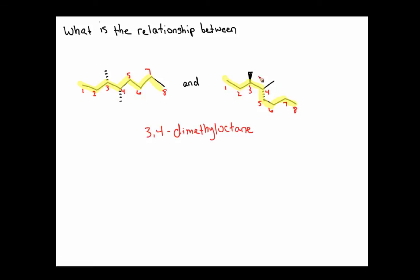And we could start doing bond rotations or manipulations and try to make them look alike to see if they're identical or enantiomers or what they might be. But sometimes, when we have a compound like this, it's easiest just to assign RS configurations to our chiral centers and then work from there. So we have chiral centers at carbons 3 and 4.